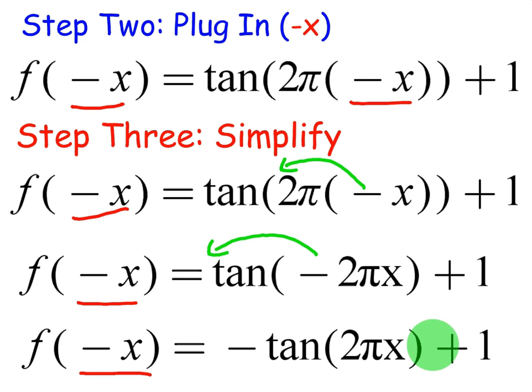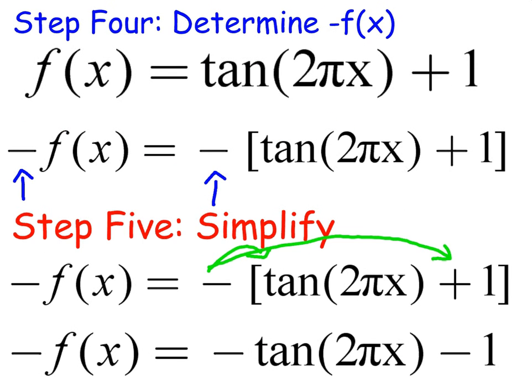So here is our f of negative x. Let's move on and show what negative f of x is. So for step 4, determine negative f of x. In this particular case, we are going to multiply the entire function by negative 1. So in this case, that will affect the plus 1 because the plus 1 is part of the function. So we're going to end up for step 5 when we simplify, we're distributing that negative into the tangent of 2 pi x. We're distributing it in front of that, and we're also distributing to the plus 1.